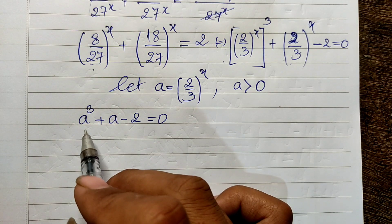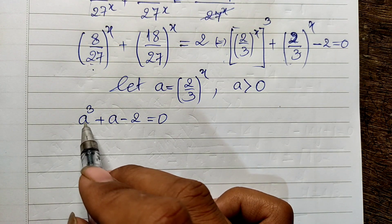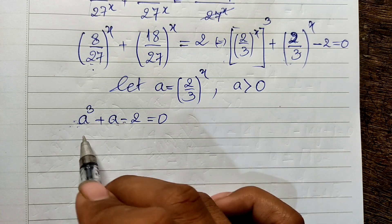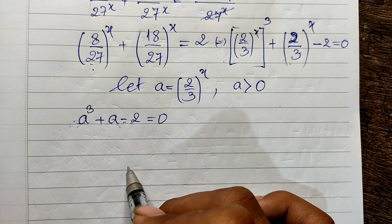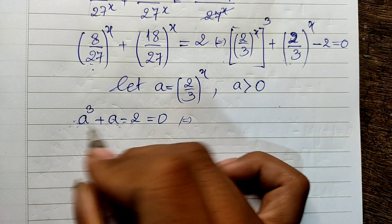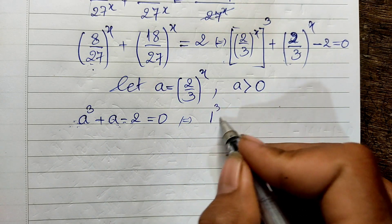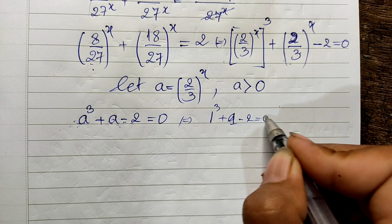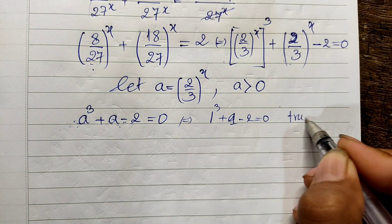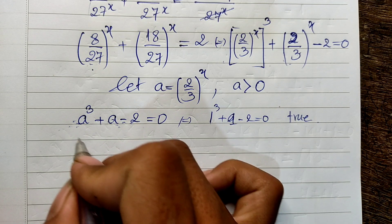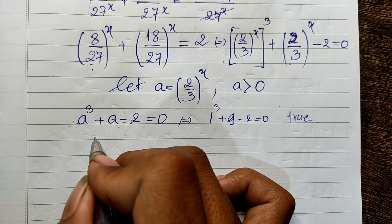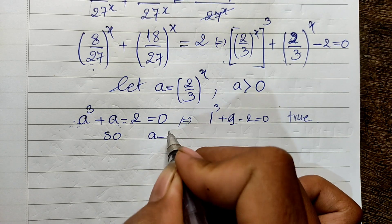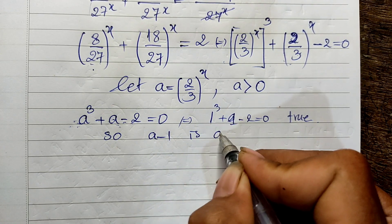Now looking at this equation, if I replace a by 1, I get 1 cubed plus 1 minus 2, which equals 0 — that's true. So a equals 1 is a solution, meaning a minus 1 is a factor of this equation.